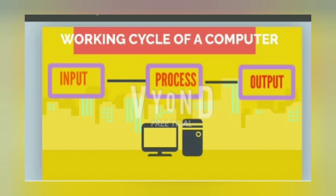You can understand this using the example of a washing machine. In a washing machine, what do you do? You put in dirty clothes — those dirty clothes are called input. After the dirty clothes are put in, the washing machine washes the clothes, and that is called process. After the washing is complete, it gives you clean clothes — the clean clothes are the output. So in our life everywhere, we use this cycle: input, process, output.